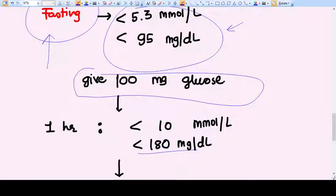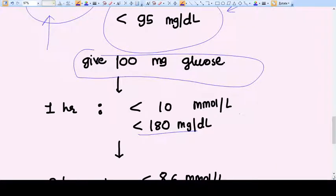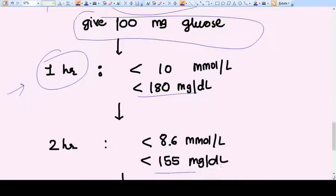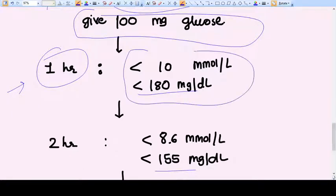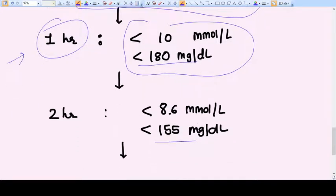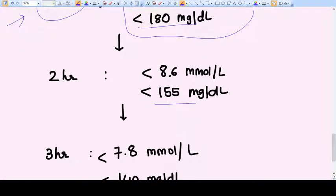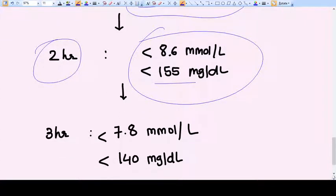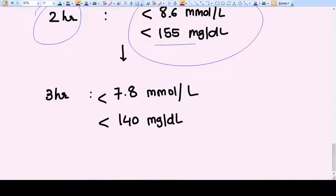Then after one hour, you will measure again the glucose test. The cutoff here is 10 millimole per liter and 180 mg per deciliter. Now after two hours, the cutoff is 8.6 millimole per liter and less than 155 mg per dL. And now after three hours, the cutoff is less than 7.8 millimole per liter and less than 140 mg per dL.